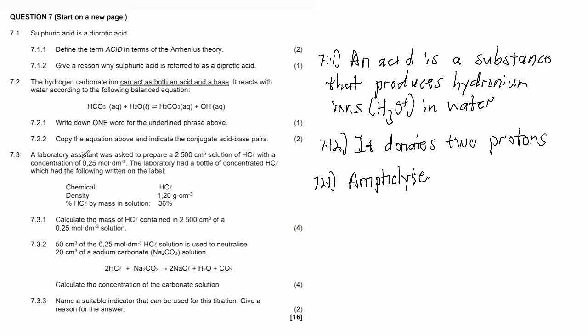7.2.2 says copy the equation above and indicate the conjugate acid-base pair. So we're just going to start by copying our equation: HCO3- plus H2O gives H2CO3 plus OH-. We are not really much concerned about the phases.